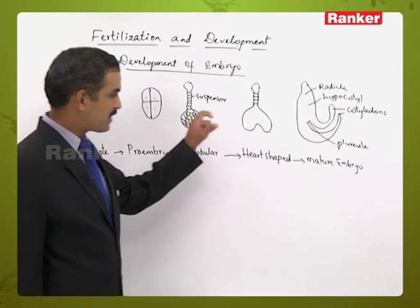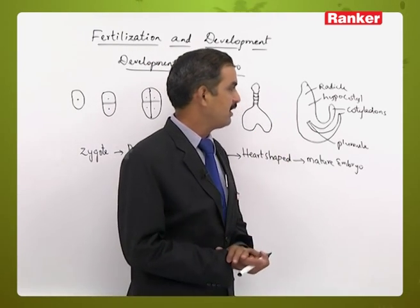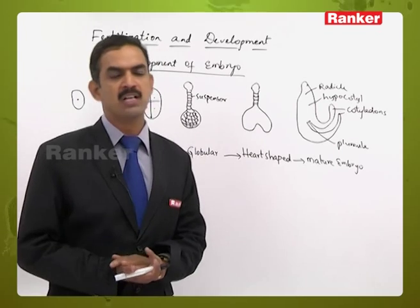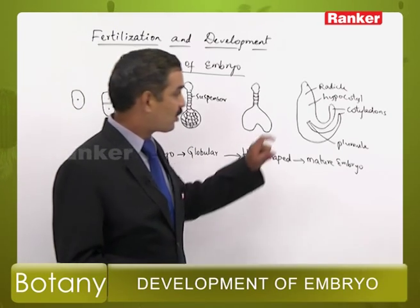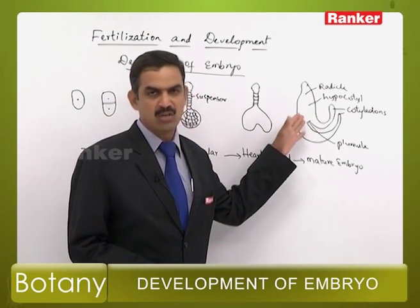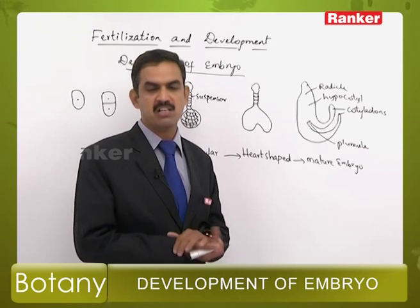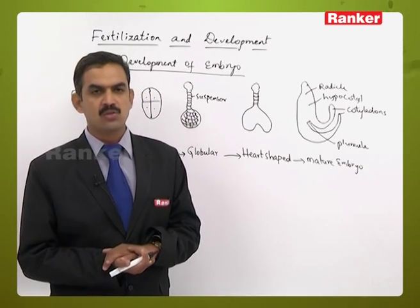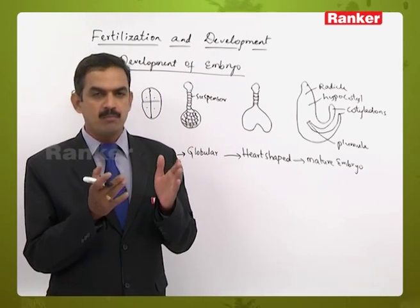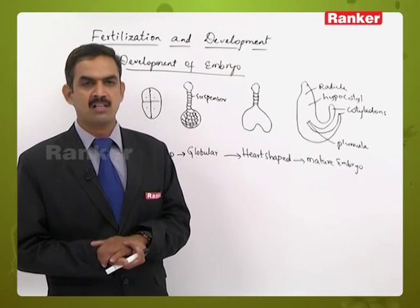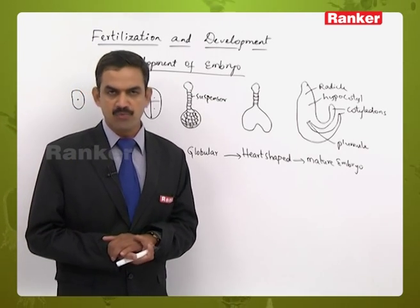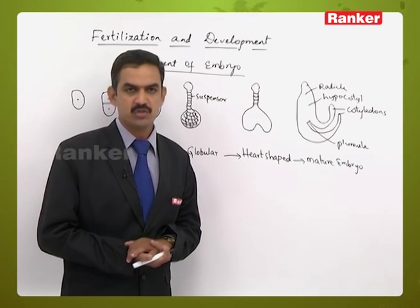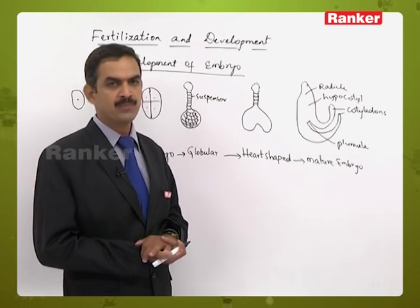The matured embryo contains cotyledons. When the plant germinates, the cotyledons will give rise to the primary leaves. Cotyledons are fleshy in nature, particularly in the dicots, which are laden with a large amount of food materials. They serve as nutritive structures for the embryo until the plant starts producing its own food material.